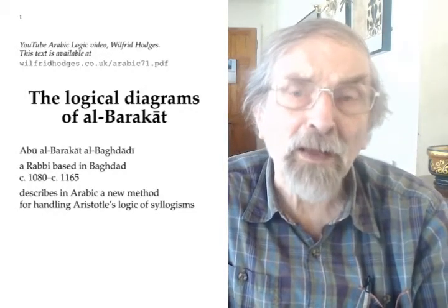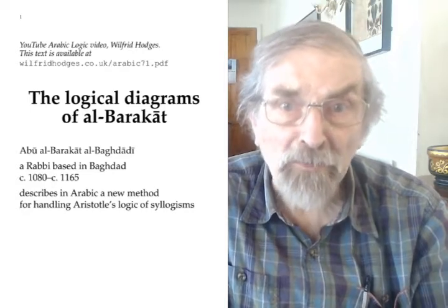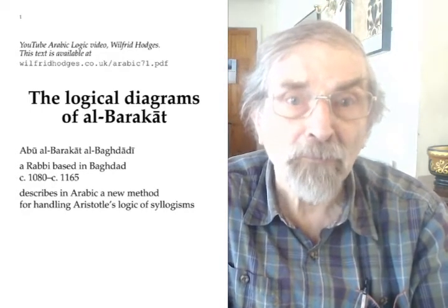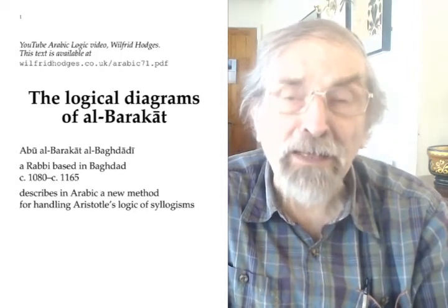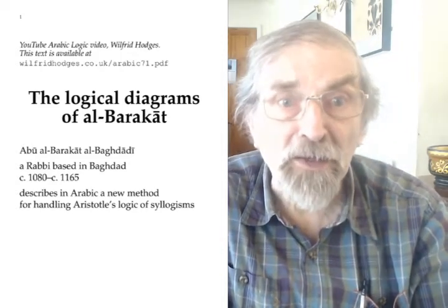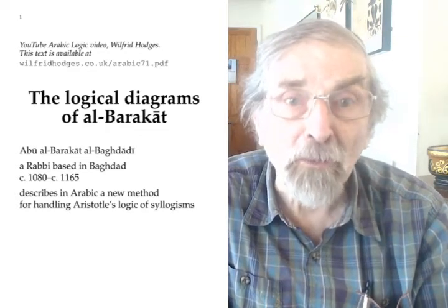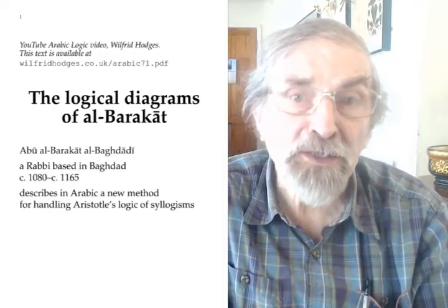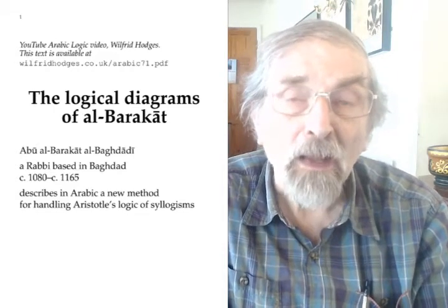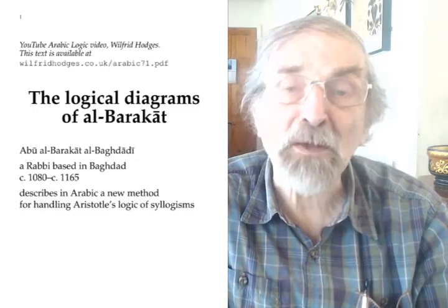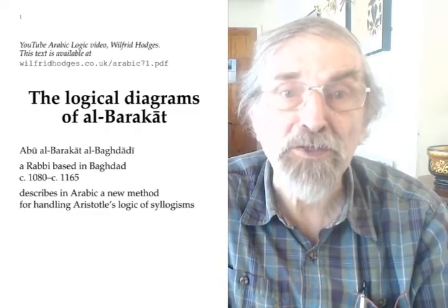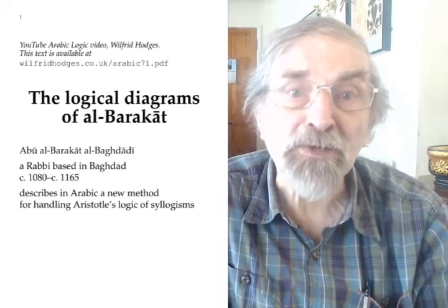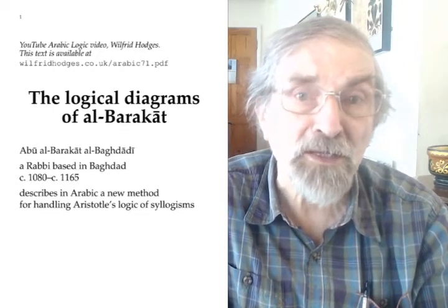You've probably come across Venn diagrams as a way of using circle diagrams to do calculations in set theory. They were introduced by John Venn in the late 19th century, not for set theory in general, but as a way of doing calculations in Aristotle's logic of syllogisms. You may also have heard that Venn wasn't the first person to use diagrams to do syllogisms — in fact there are other kinds of diagrams for syllogisms going back to the late 17th century.